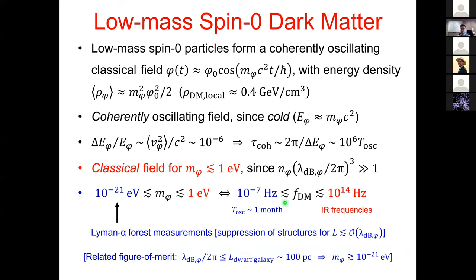This broad range of possible dark matter particle masses — from about 10⁻²¹ eV up to about 1 eV — implies a similarly broad range of possible oscillation frequencies, spanning anywhere from about 100 nanohertz (where the period of oscillation is conveniently of the order of a month) all the way up to about 100 terahertz, corresponding to the infrared region of the electromagnetic spectrum. This is a range spanning about 20 orders of magnitude.